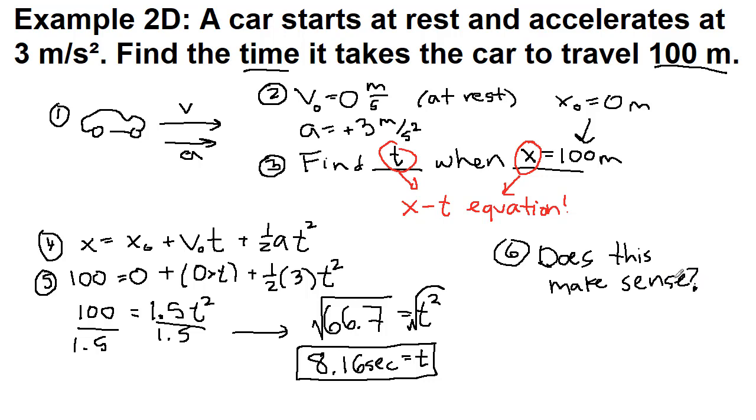And we think to ourselves, okay, the car is starting at rest, and it's speeding up. 100 meters is a pretty big distance, so it will take a relatively long amount of time. But the most common math mistake that I see students make is not taking the square root.